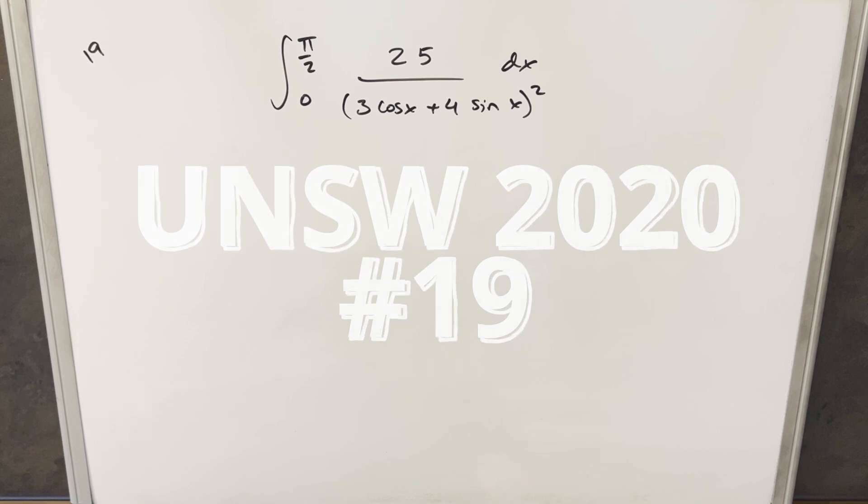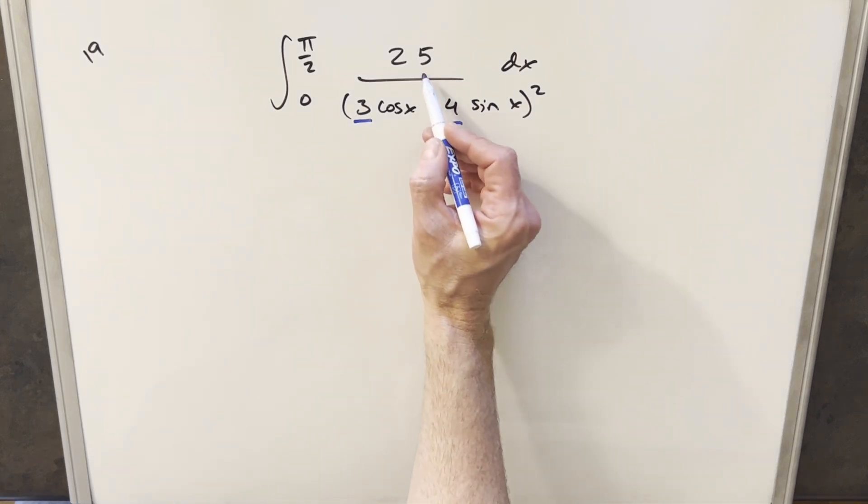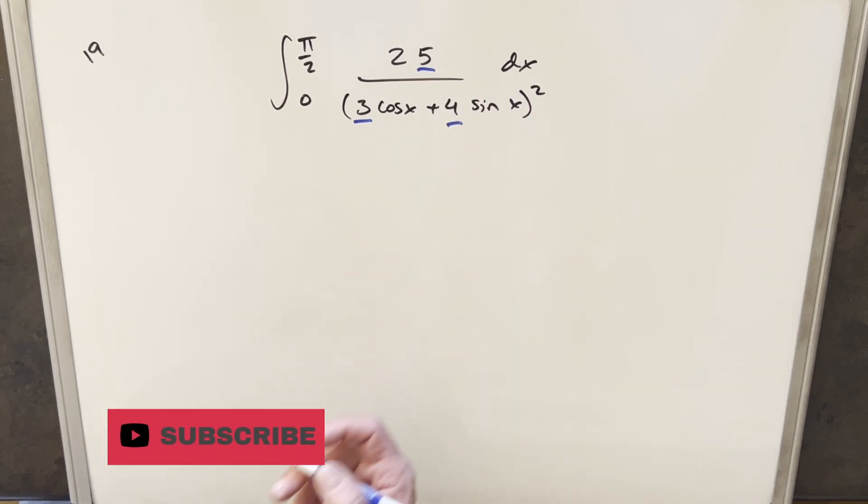25 over 3 cos x plus 4 sin x all squared dx. Okay, the first thing I notice here is this 3, 4, 5 situation or 5 squared, which makes me think of a 3, 4, 5 triangle.